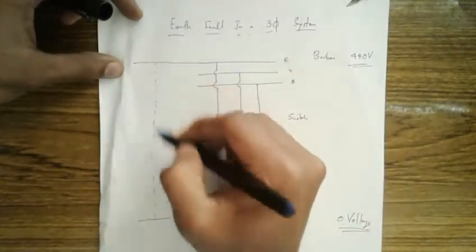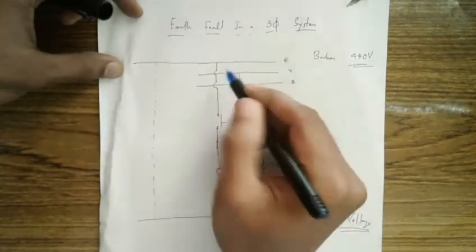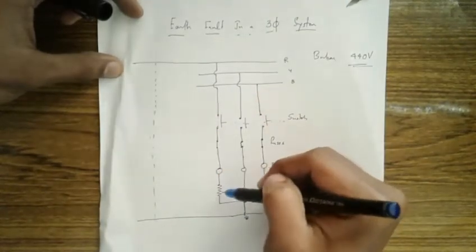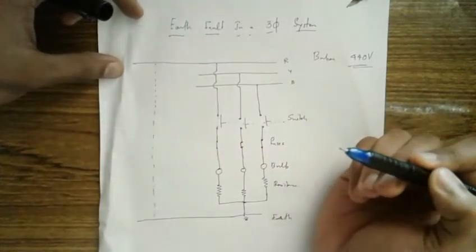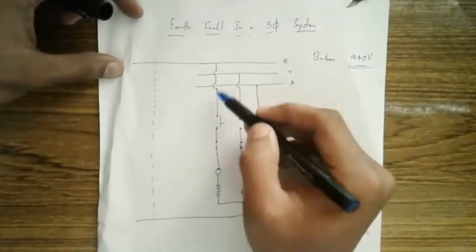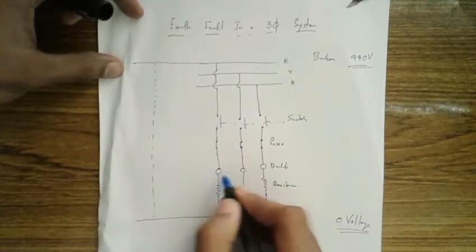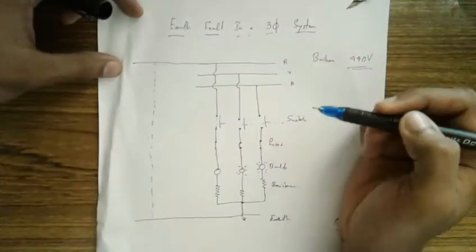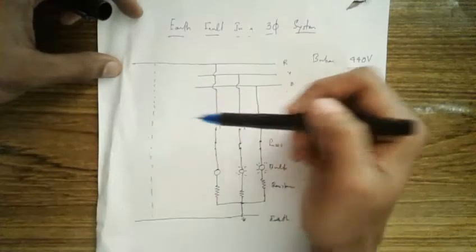If there is an earth leakage, most of the current will pass through the leakage path, which means no current will pass through the bulb circuit. Current will always find the easiest path to go through, and since there is resistance in the bulb circuit, it will pass through the leakage path instead. So this bulb will not glow, while the other two bulbs will glow - a clear indication that there is an earth fault on R.